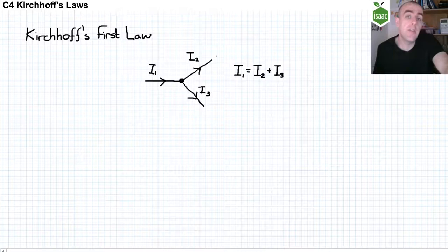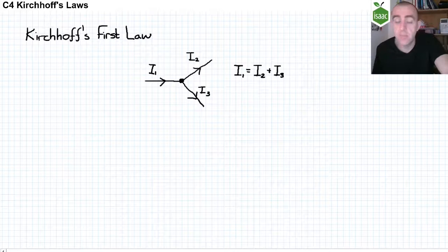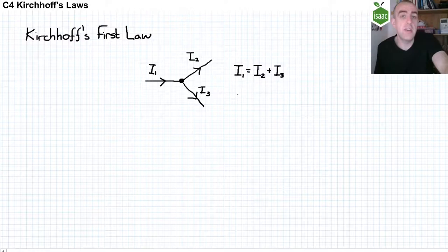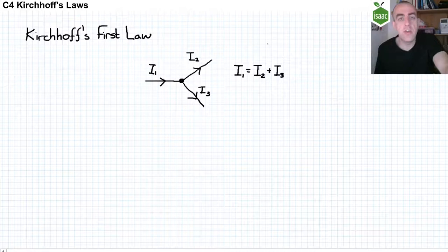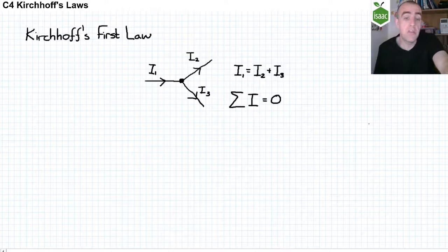Now we could define current into a junction as positive and current out of a junction as negative, or we could define them the other way around. It actually doesn't matter. Let's define the current into a junction as positive and the current out of a junction as negative. In that case the total current is zero, and in fact that would be true even if we had defined our currents the other way around. So Kirchhoff's first law can be written as the sum of all currents is zero.